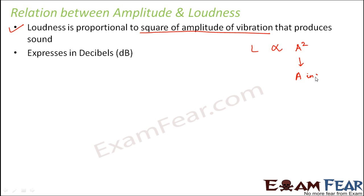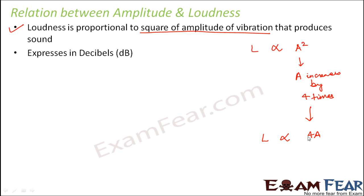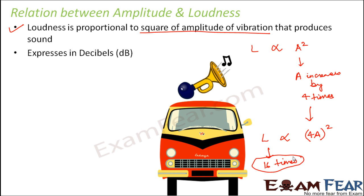If amplitude increases by four times — say the amplitude was 'a' and now it has become '4a' — what would be the loudness? Since loudness is proportional to the square of amplitude, the loudness will become 16 times. So loudness will increase by 16 times. With that, you can get an idea about how loudness increases for different sounds.